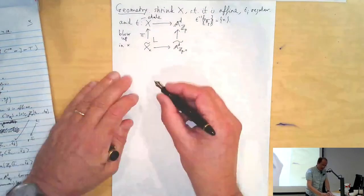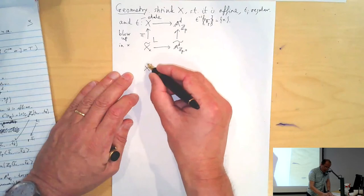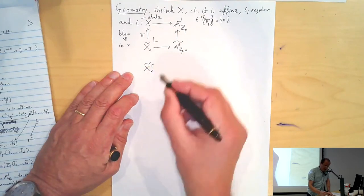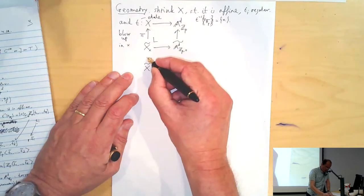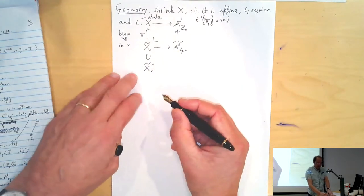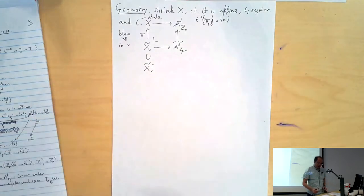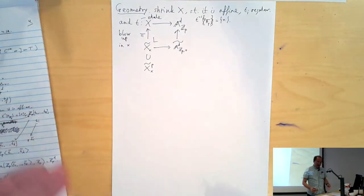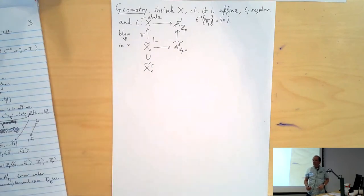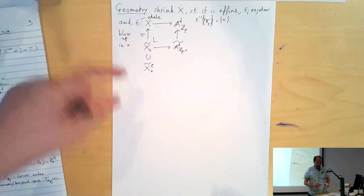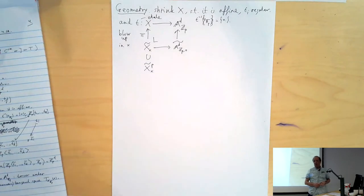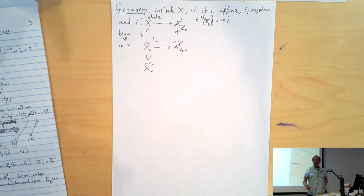This is the open subset where p is a generator for the pullback of the ideal. The blow-up transforms closed subschemes into effective Cartier divisors — that is what a blow-up does. This subscript p indicates we take the open part where p is a generator.